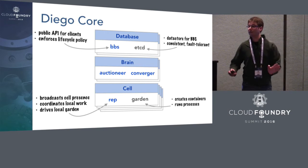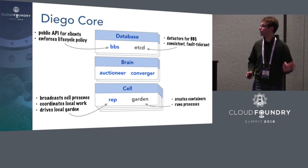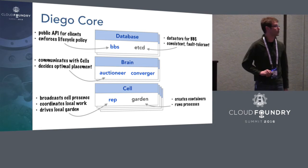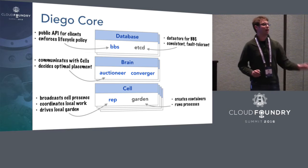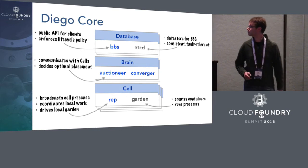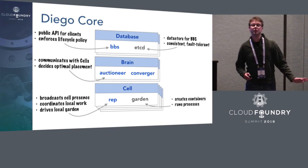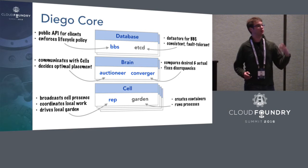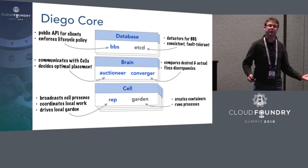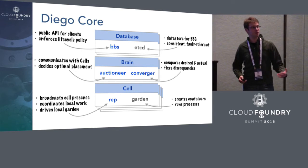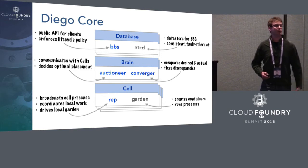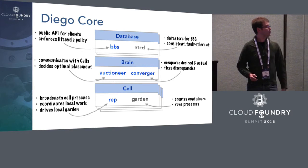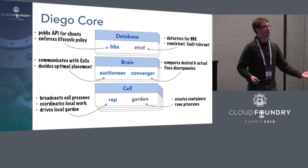Even though the BBS knows a lot about lifecycle policy, it is not itself responsible for making placement decisions. Instead, it delegates that responsibility to the auctioneer, which communicates with all registered cells and makes optimal placement decisions, telling them what work to do in what order. Last but not least, we have the converger, which periodically analyzes the global state of work running in Diego and takes corrective actions — recreating missing instances, stopping extra instances, and rescheduling work that is ready to be rescheduled.